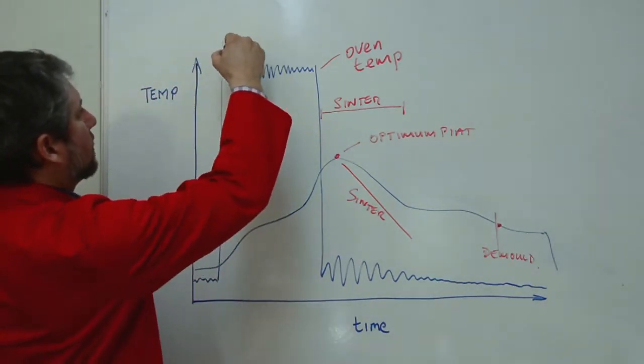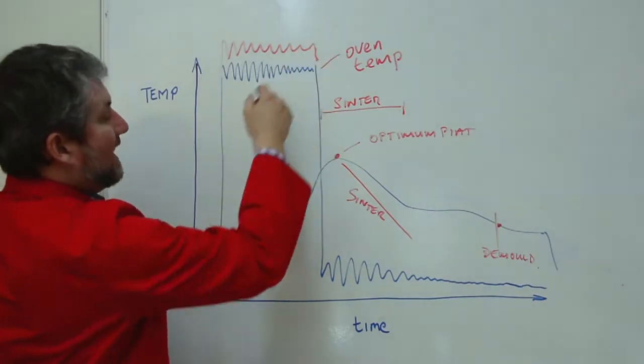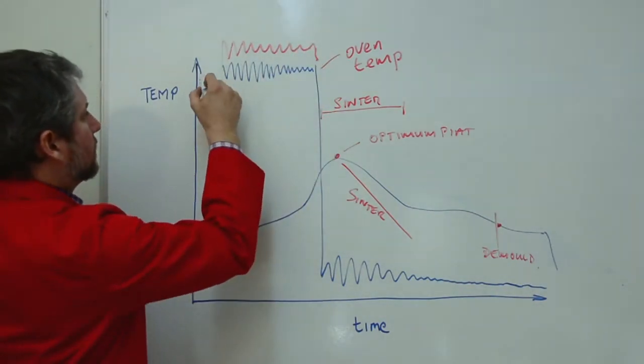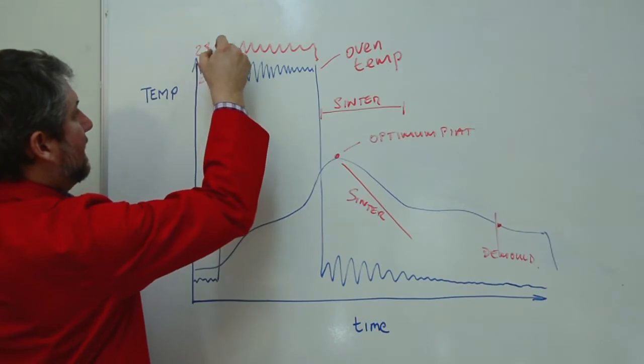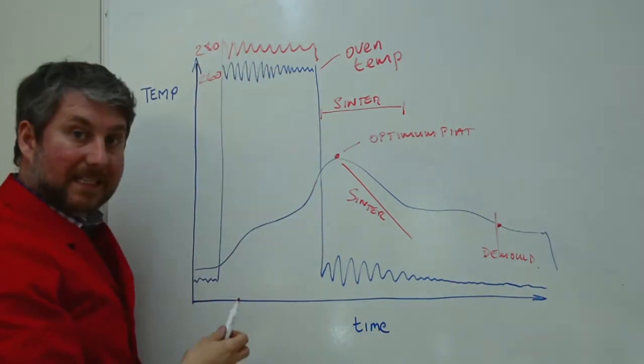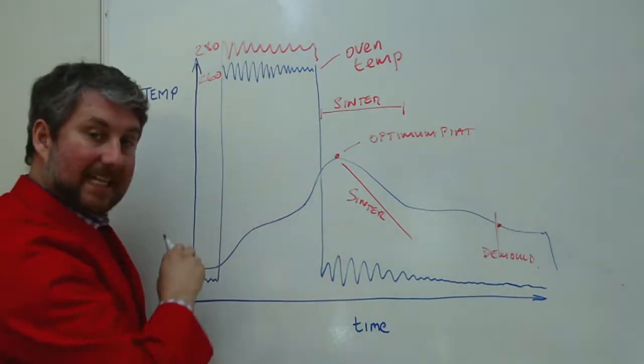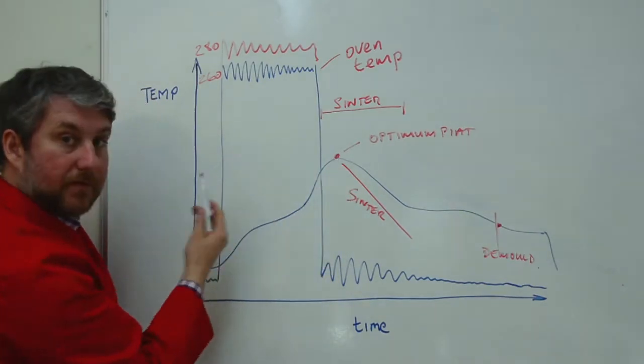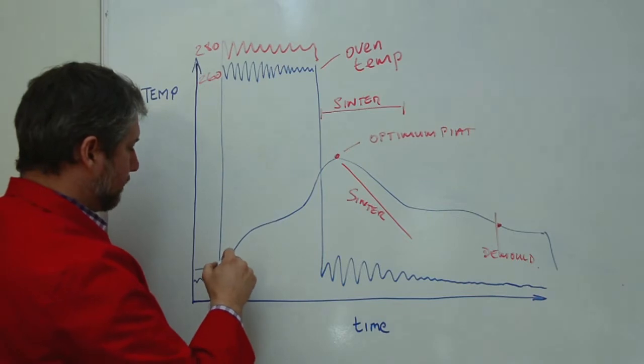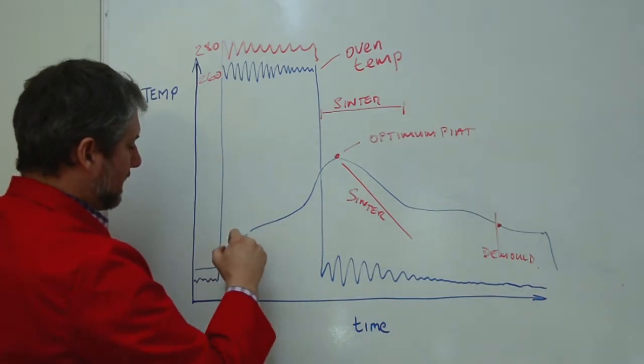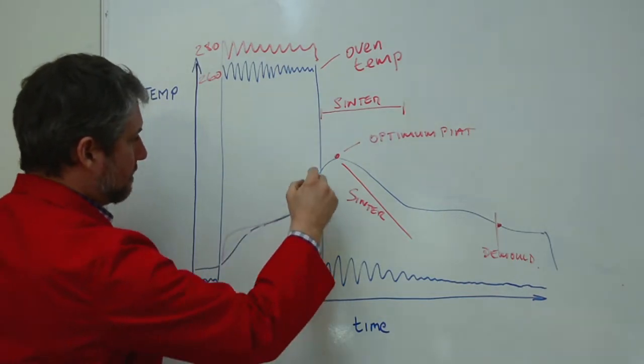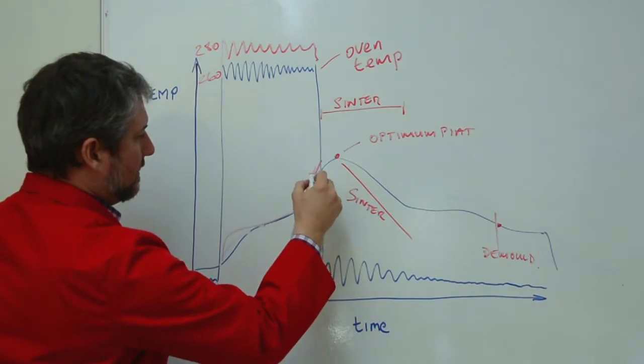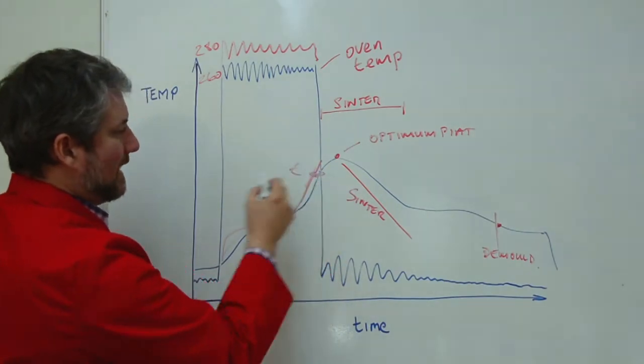If you were to increase your oven temperature, say from 260 to 280, it will effectively increase the rate at which the heat goes into the mold. So this graph would all move to the left a little bit. So you're going to get something like this. And you'll get this time saving here.